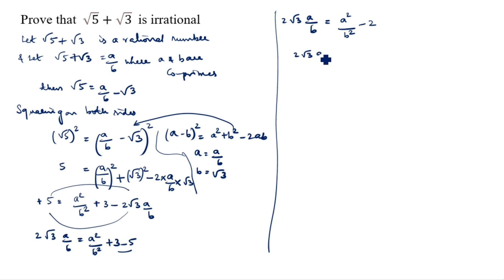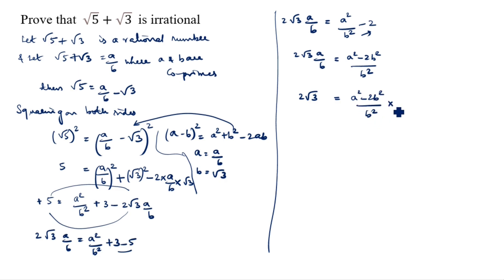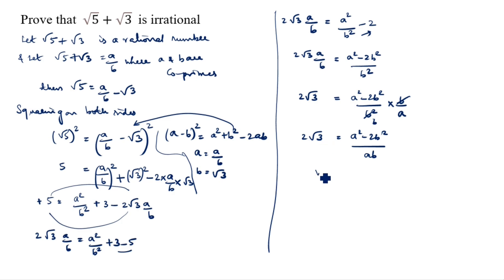So 2 root 3 times a by b equals a square minus 2b square by b square. Solving for root 3, multiply both sides by b divided by a: root 3 equals a square minus 2b square divided by 2ab.